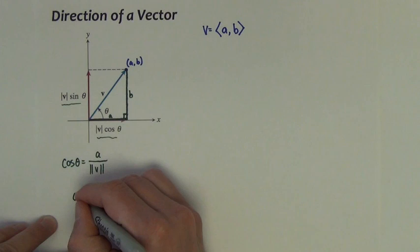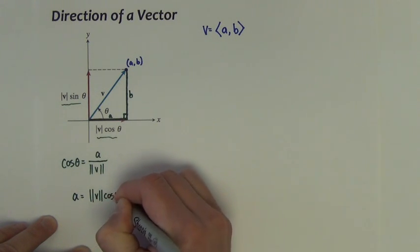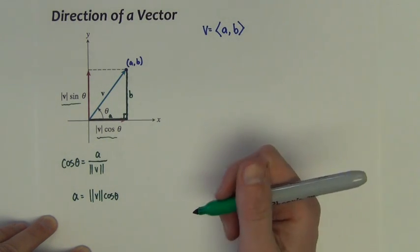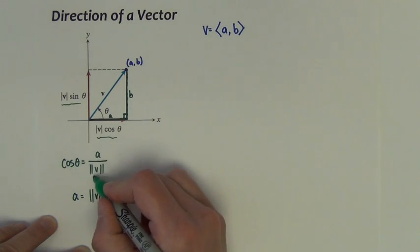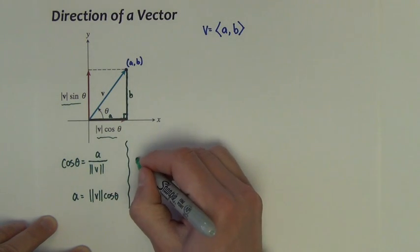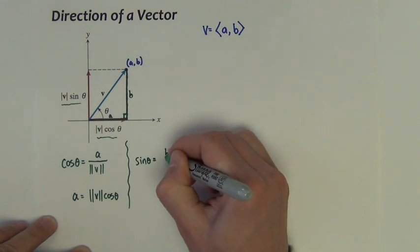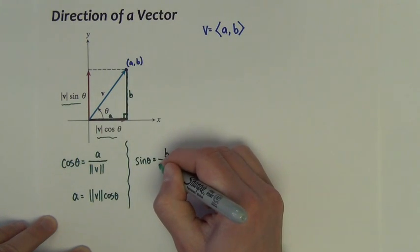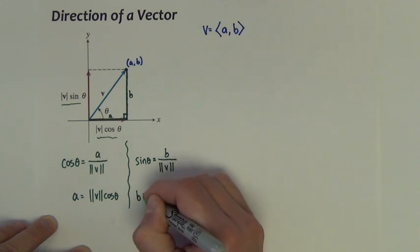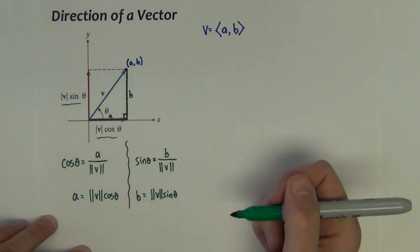Therefore, a is equal to the magnitude of the vector times the cosine of theta. All I did was multiply the magnitude across. Now likewise, we can do a similar thing. I could say that the sine of theta is equal to its opposite length divided by its hypotenuse length, which is magnitude of the vector. So b equals the magnitude of the vector times sine of theta.